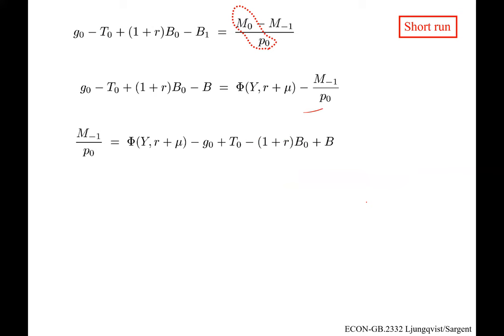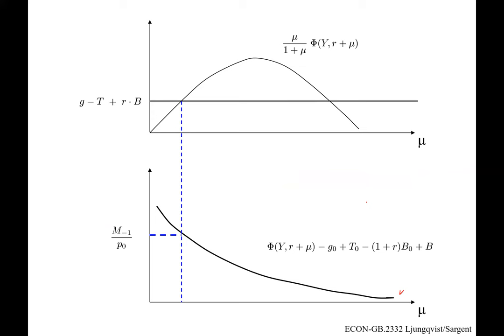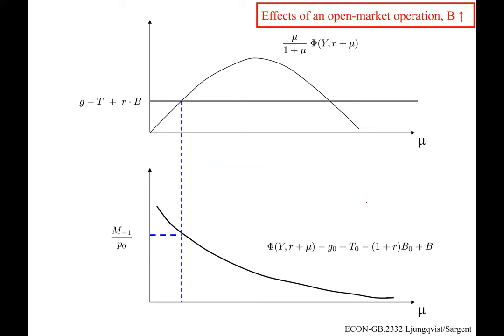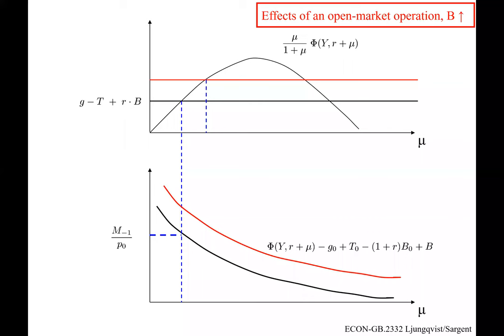Once mu is determined from the long-run analysis, we know real balances M_0/P_0 = phi(Y, R + mu) — so once mu is pinned down, real balances at time zero are pinned down too. Changing M_0 via an open market operation means P_0 adjusts to maintain M_0/P_0 at its equilibrium level, given the now-higher mu.